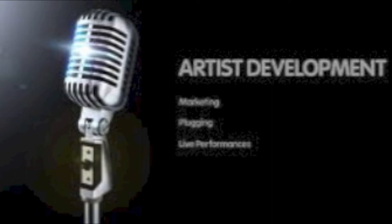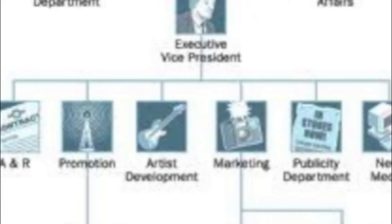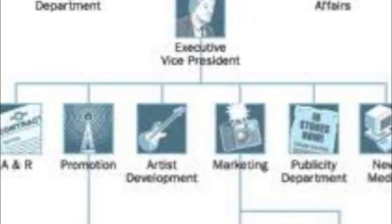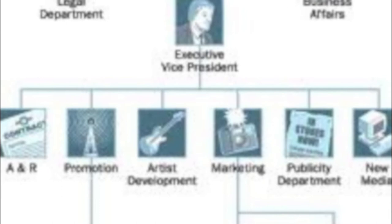Business affairs are in charge of the finances and payroll, which is paying people and so on. The label liaison is usually one person or a small group of people and they take care of all the discussions with the record label's distribution company.